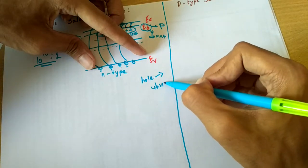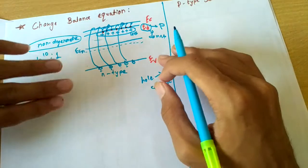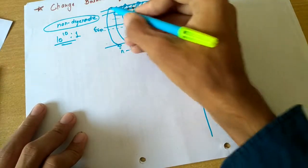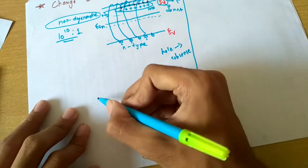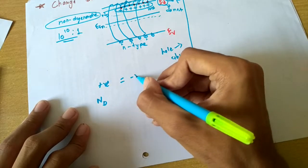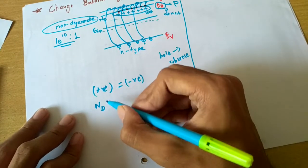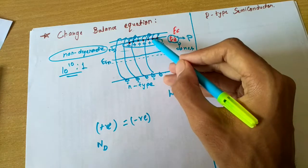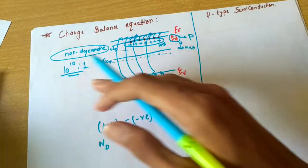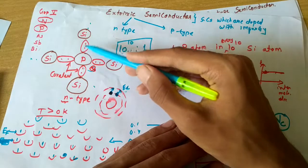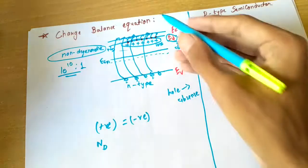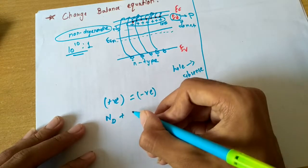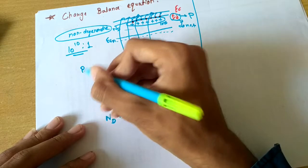The hole is nothing but the absence of electrons, so it behaves as a positive charge. But if we consider only this particular level, overall the material will be neutral. Since overall material is neutral, and the donor impurity concentration is Nd, then positive charge equals negative charge. The positive charges are Nd — these are the ions formed due to the phosphorus atom donating electrons to the conduction band of silicon. Other positive charges come from the holes created in the valence band. This notation denotes the number of holes in an n-type semiconductor.